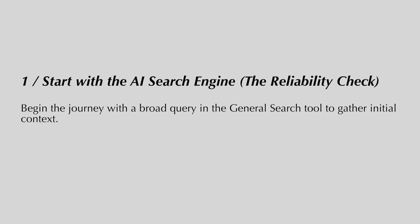Let's start with step number one: the reliability check. I'm beginning with a broad query in the general search tool to gather initial context. I want to make sure that my research question or topic is a good one to pursue — retrieving credible academic-grade results, a list of research papers, and a topic scope to ensure what I'm interested in is actually useful.